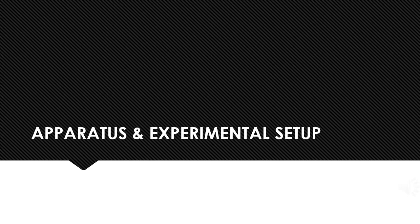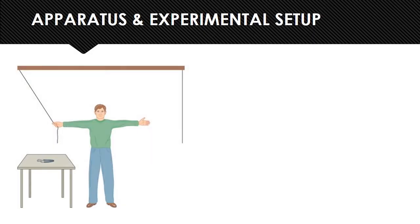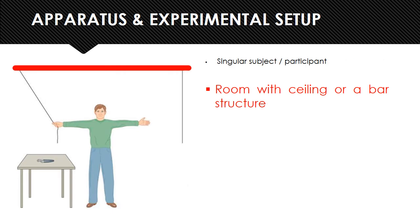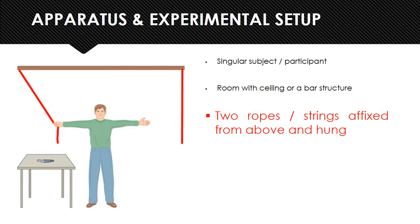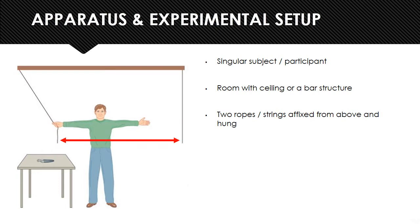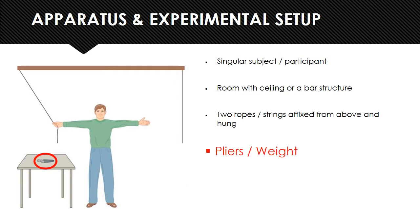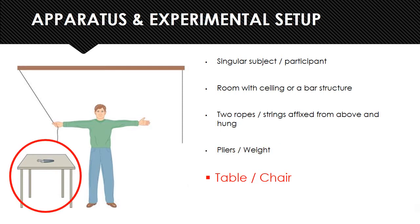First up, there is the apparatus and the experimental setup. For this experiment, there was a single subject or participant in a room with a low ceiling or bar structure from which two strings were attached and hung from above. The goal of the experiment was for the participant to tie these two strings together. The strings were hung far enough away that the participant could not reach both of them at the same time — if they reached for one string, they couldn't reach the other. There was also a pair of pliers or some other heavy tool, bucket, or weight lying around the setup, as well as a table or chair depending on the adaptation of the experiment, which the participant was allowed to use.